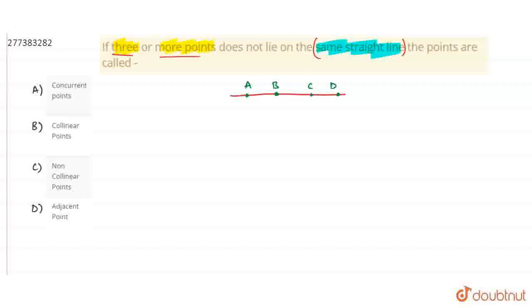And we have the question given. Suppose they don't lie on the same line. This means A, B, C, D, etc. If all points do not lie on a particular line, then what do we say?